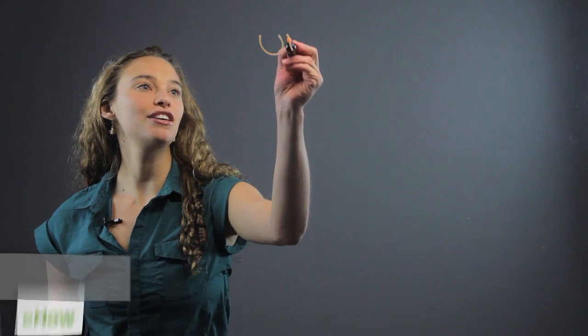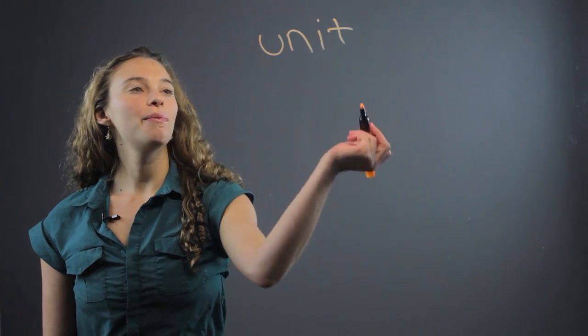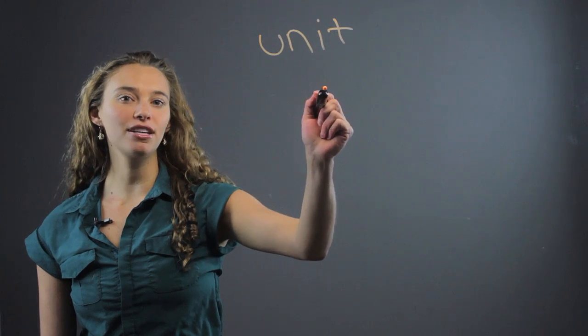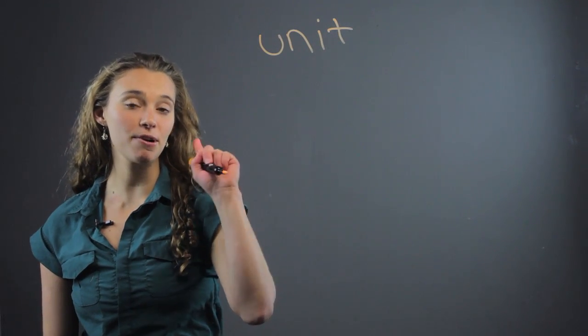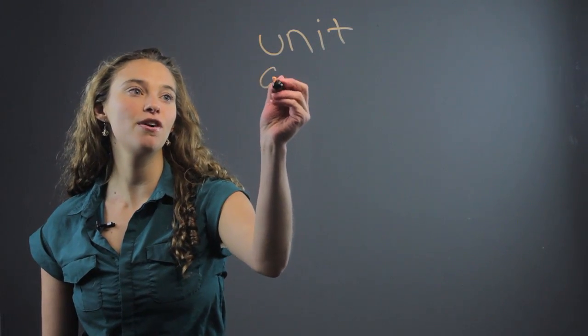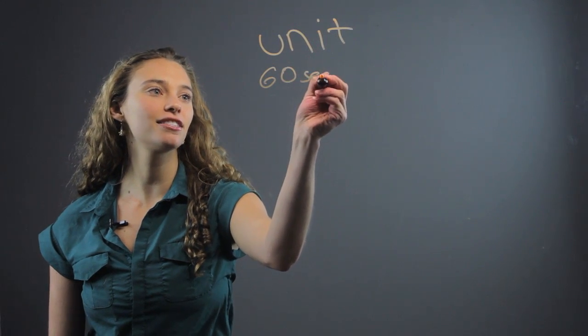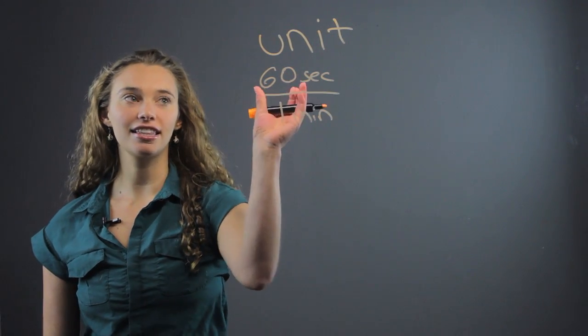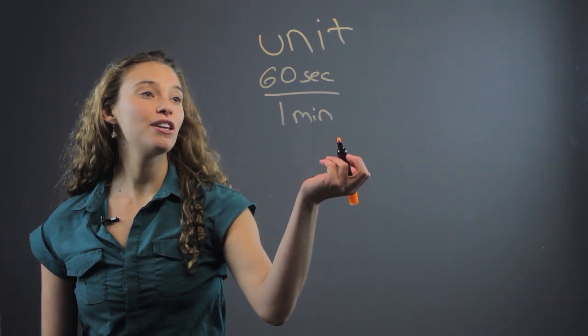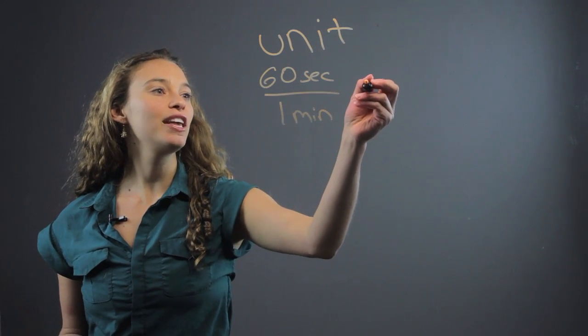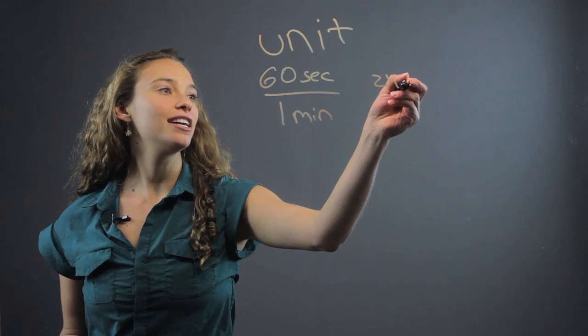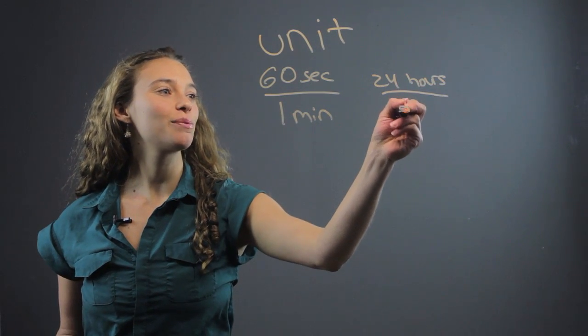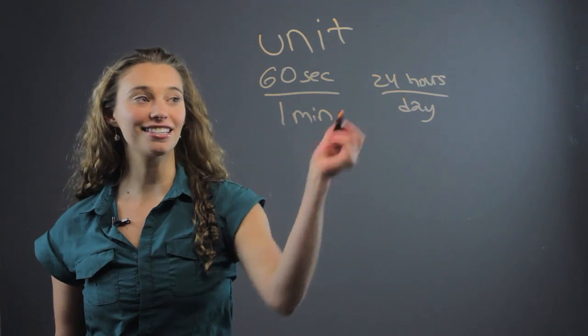There is such a thing as the unit factor, which for conversions means that it's a certain amount of something per unit, per single unit. So an example of this is we know there's 60 seconds to one minute. That is like the unit factor. We know that there's 24 hours in one day. So 24 hours per day is how we can say that.